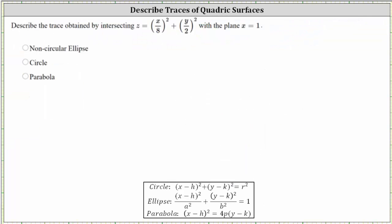So going back to the question, we now know the x equals one trace is a parabola. Let's also verify this algebraically. To do this, we substitute one for x into the equation of the quadratic surface and then write the equation in the form of a parabola shown below.